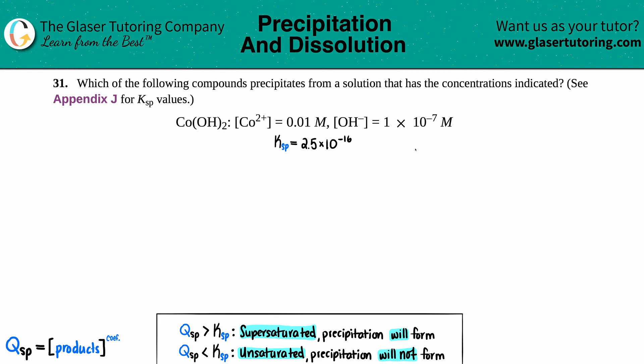Number 31: Which of the following compounds precipitates from a solution that has the concentrations indicated? See Appendix J for Ksp values. In this problem, we have cobalt(II) hydroxide, Co(OH)2.